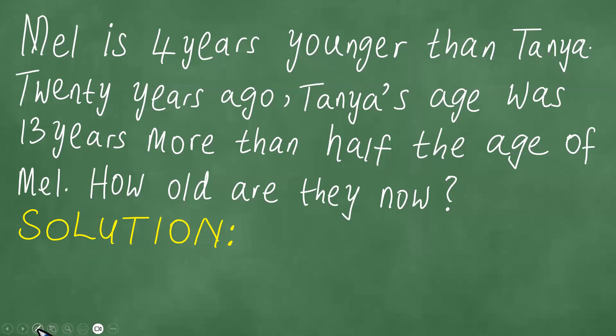We want to solve this problem. Mel is 4 years younger than Tanya. Twenty years ago, Tanya's age was 13 years more than half the age of Mel. How old are they now?